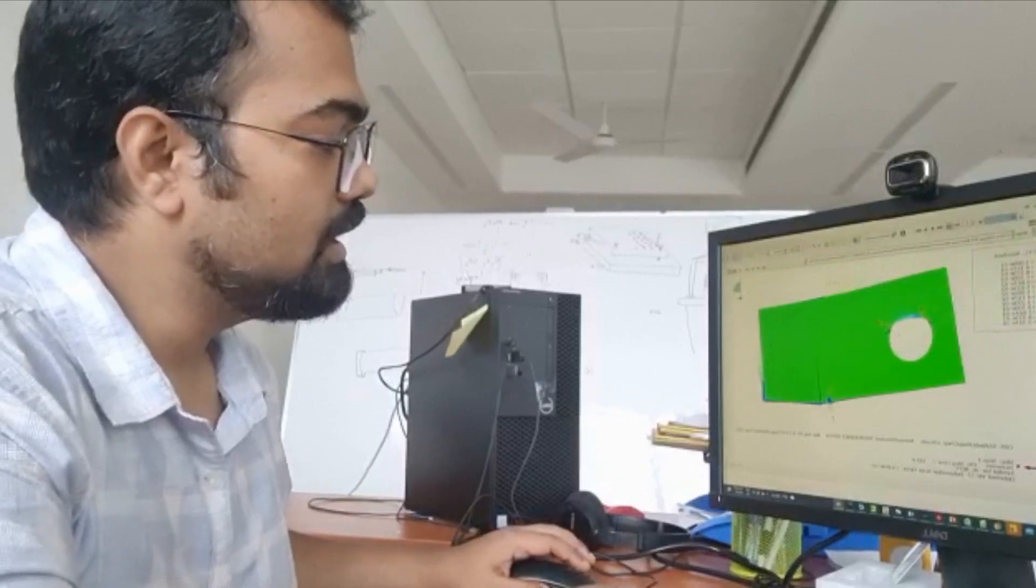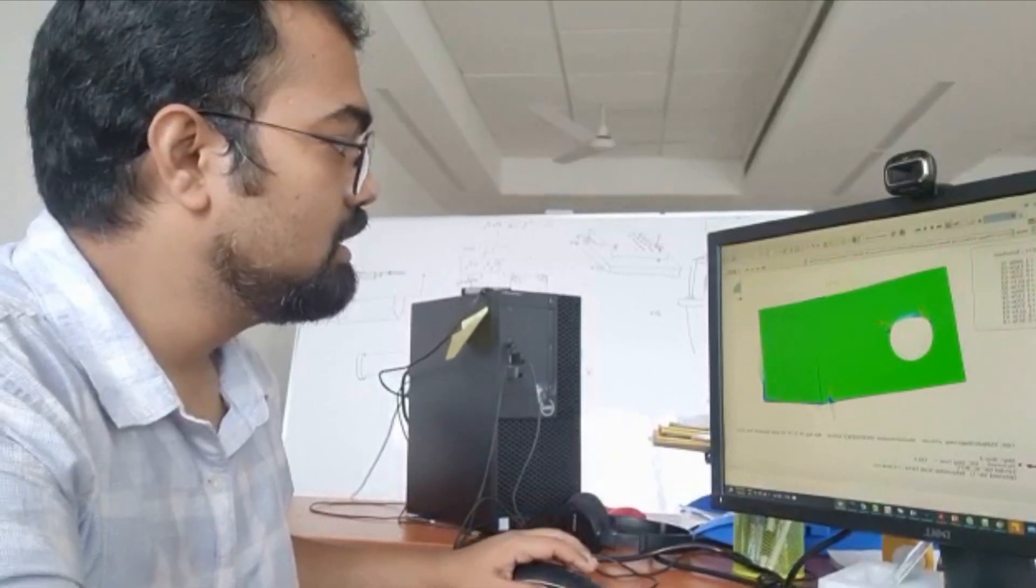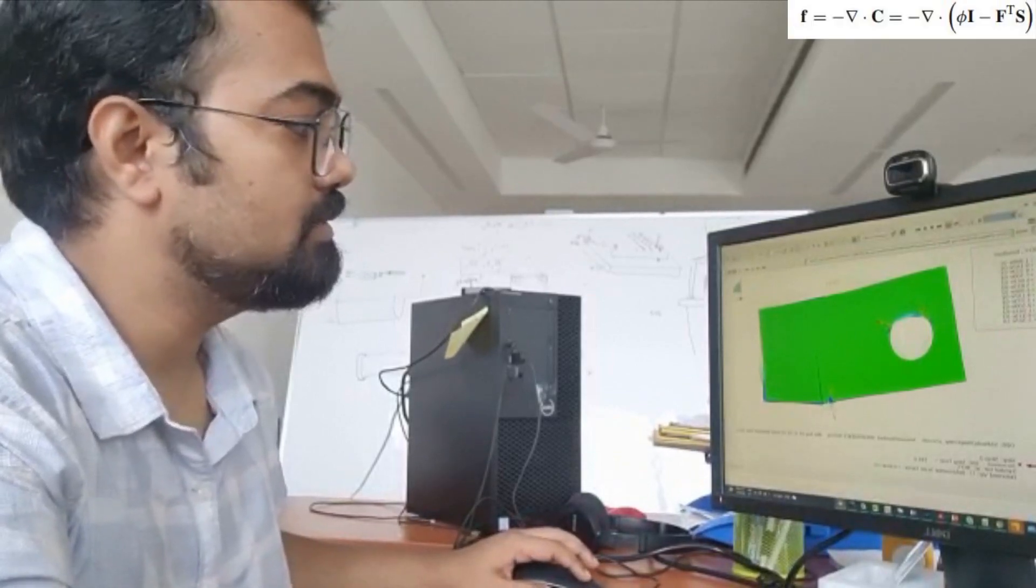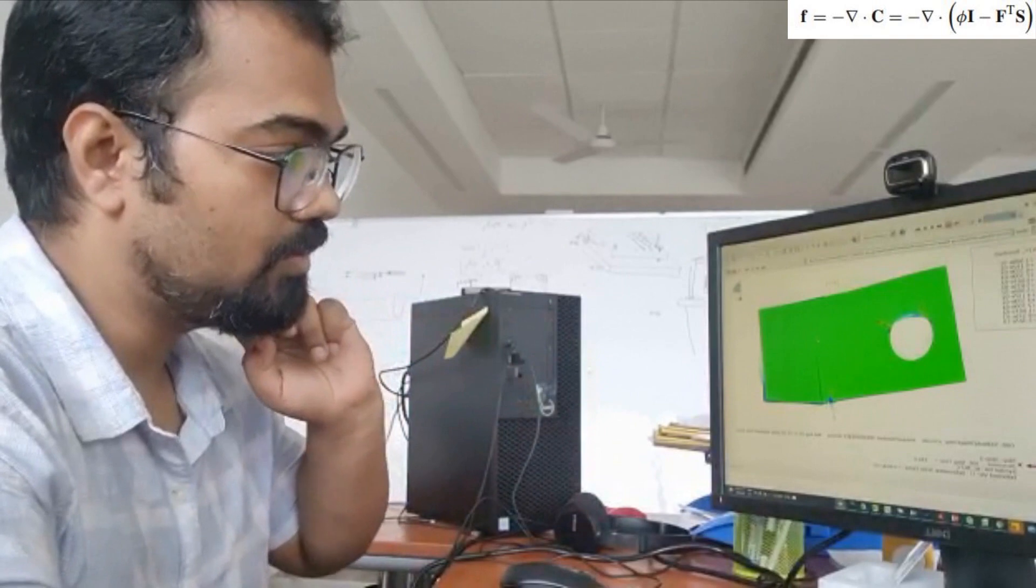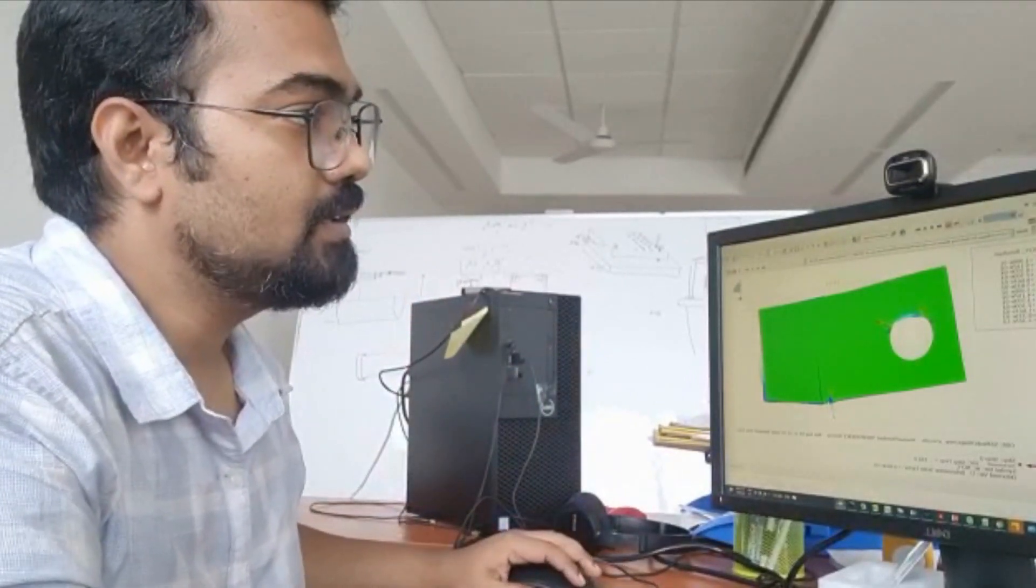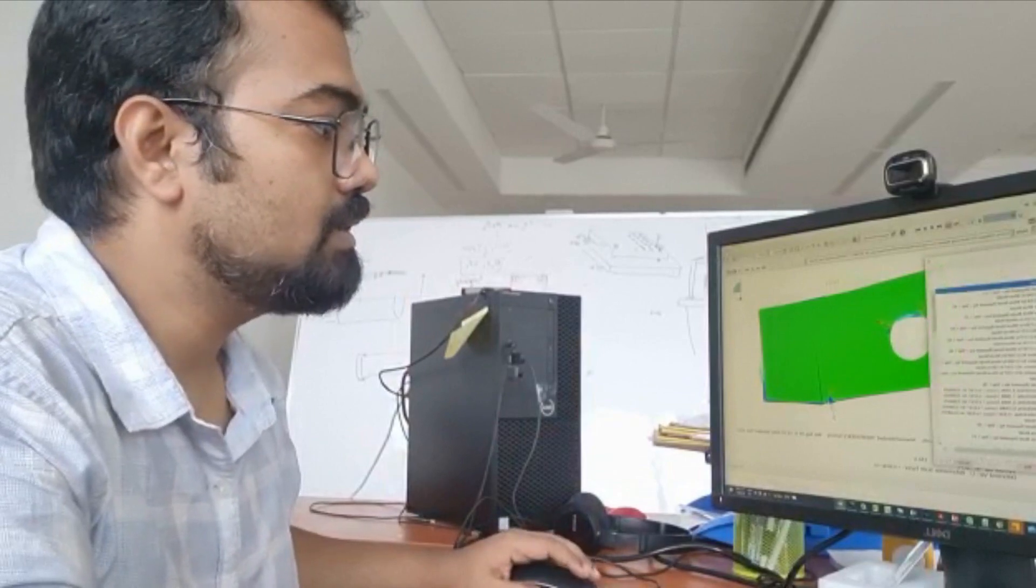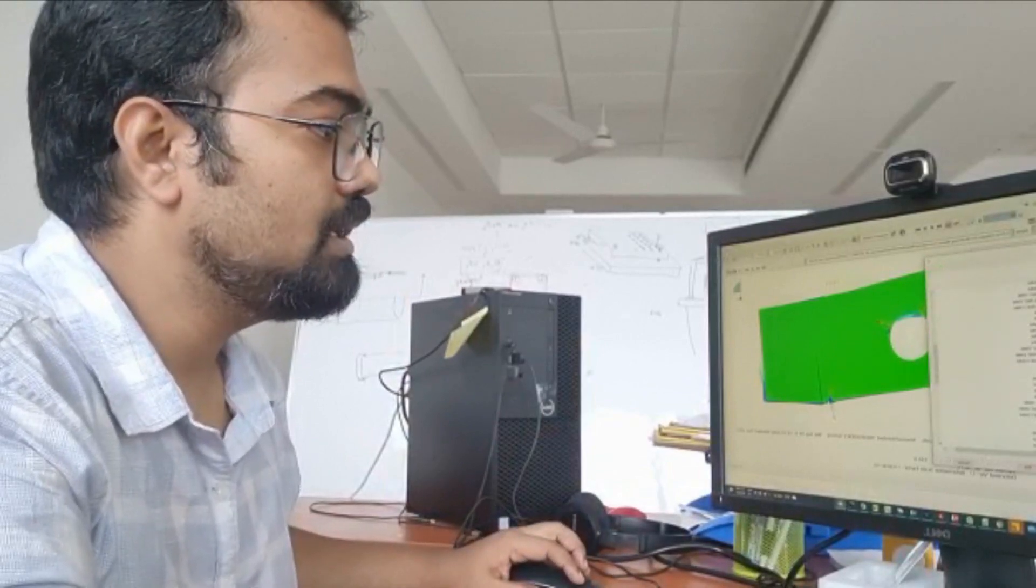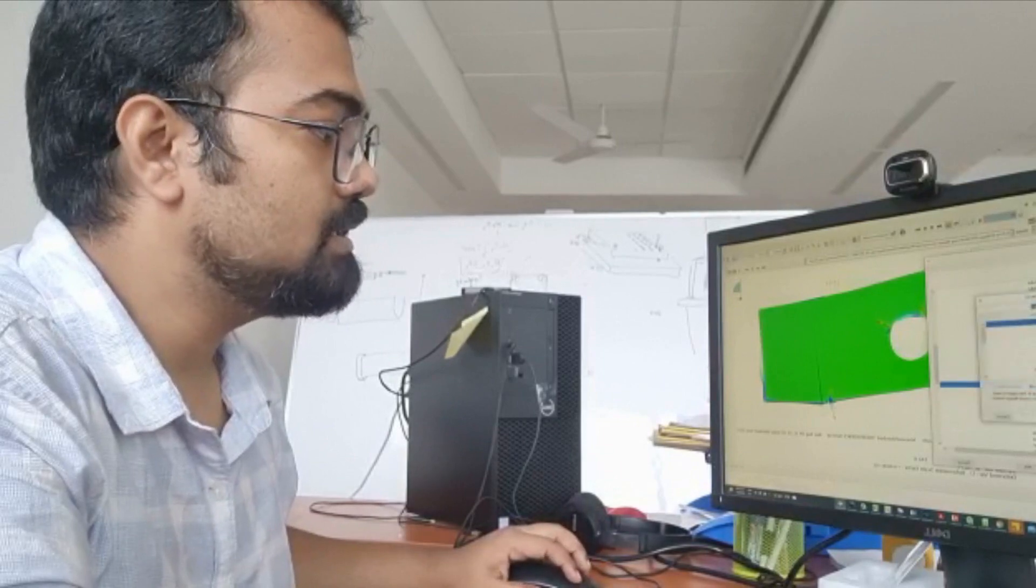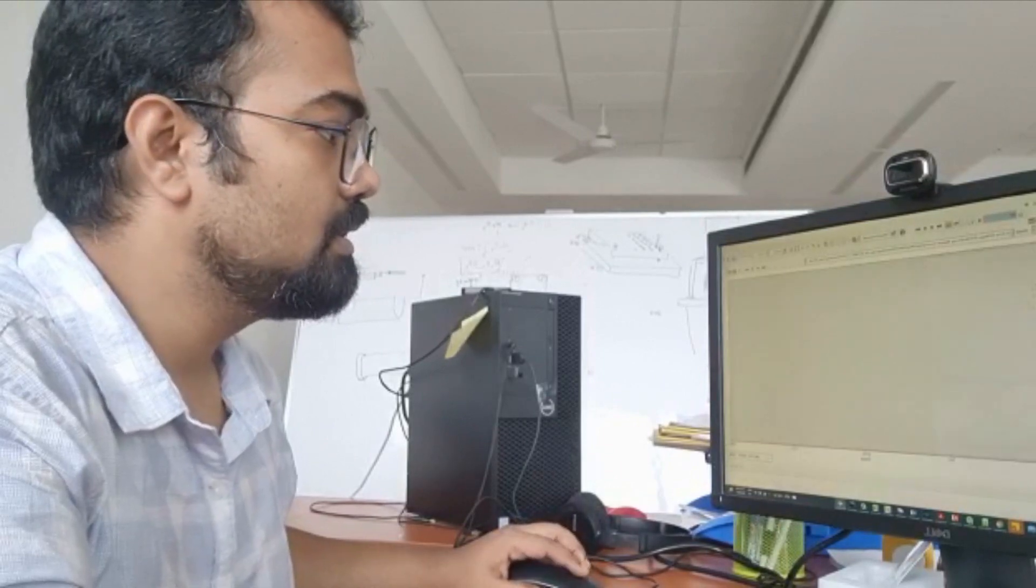We calculate this using a post-processing tool and this is how we calculate configurational forces. So these arrows are actually the configurational force vectors. And we can calculate J integral using this for different properties.